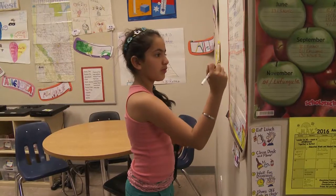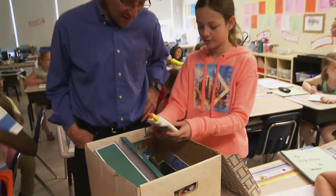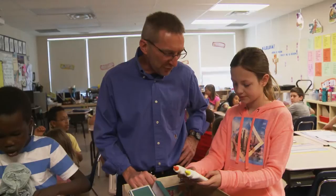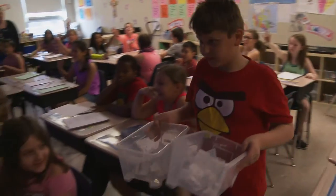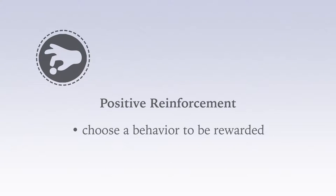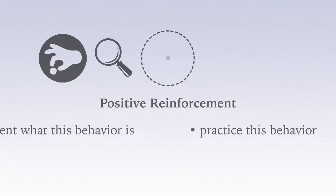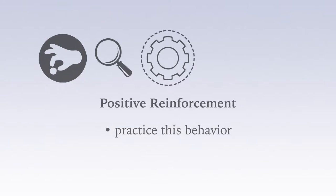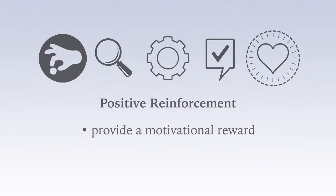Positive reinforcement is anything that follows a behavior and increases the chances the behavior will happen again in the future. The keys to successfully implementing systems that increase desired behaviors include: choosing a specific behavior that will be rewarded, teaching students exactly what the desired behavior looks like through modeling, and practicing the desired behavior, then immediately providing positive reinforcement after the behavior occurs.